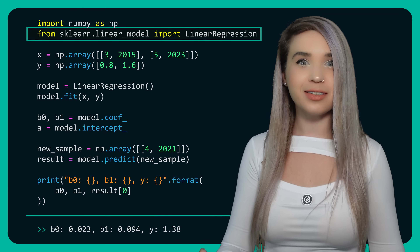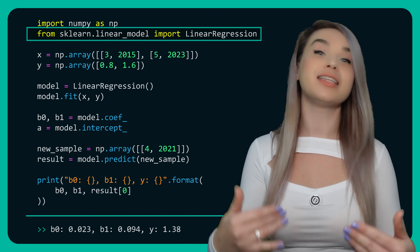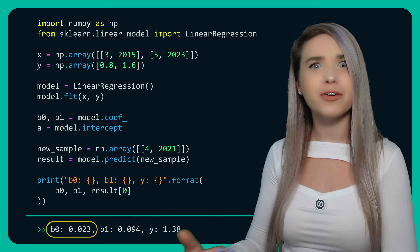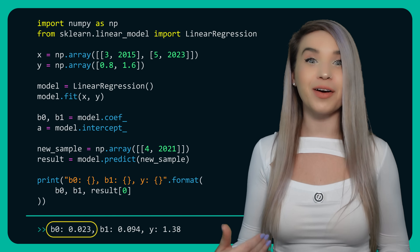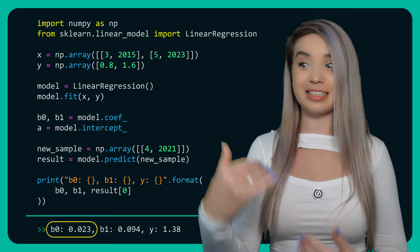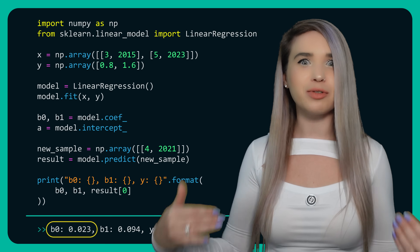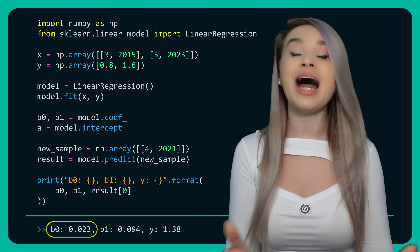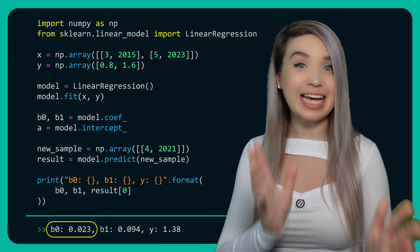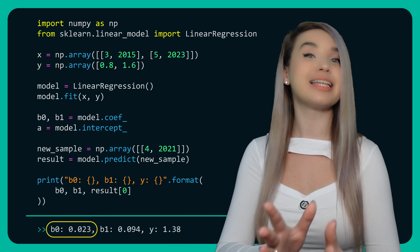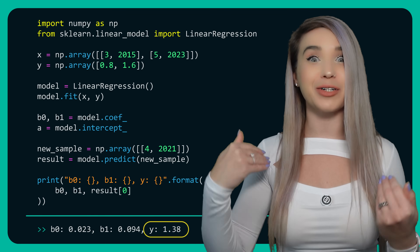And if we use it, we see a drastic change in the slope of the first feature — it used to be 0.4, but now it is 0.023. And as a result, our house is no longer 1.8 million in value, but only 1.38.